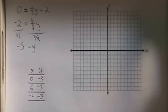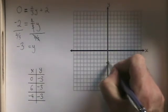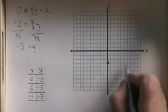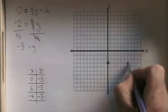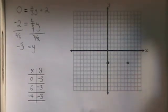Now it's time to graph it. 0, negative 3 is right here. 6, negative 3 is here. And negative 4, negative 3 is here.